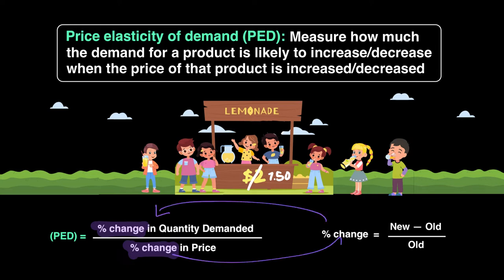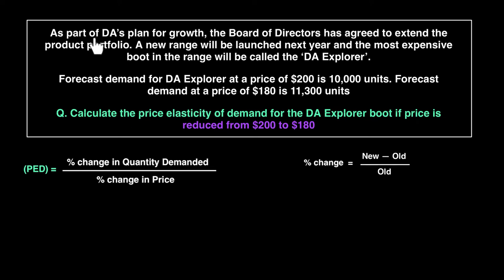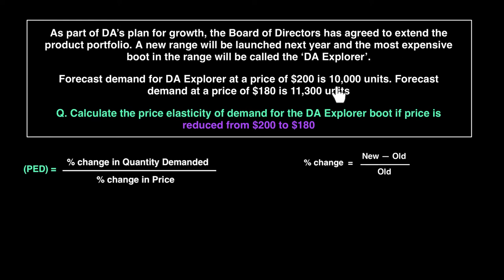Let's look at a worked example. A company called DA plans to launch a new boot called the DA Explorer. Forecast demand at a price of two hundred dollars is ten thousand units. Forecast demand at a price of one hundred and eighty dollars is eleven thousand three hundred units. The question asks us to calculate the PED when the price is reduced from two hundred to one hundred and eighty dollars.